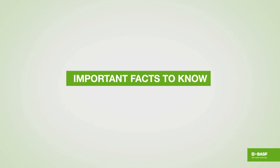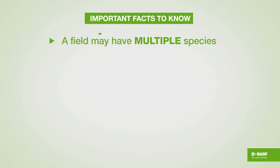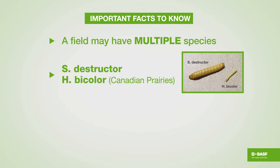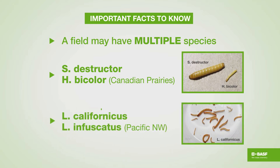Some important facts to know about wireworms: you can have multiple species in a single field. In Canada, for example, in our wheat fields we often have these two species — destructor and bicolor — vastly different sizes and shapes. These two species, Limonius californicus and Imphyscotus, often happen together.